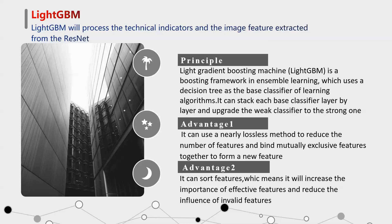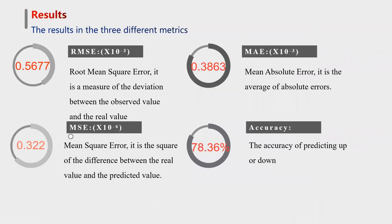So in this step, the final prediction result will be obtained by combining direct data features and the image features, which makes the whole model more robust. Now let's see the analysis and results. There are three evaluation metrics used in this paper: MAE, RMSE, and MSE respectively.